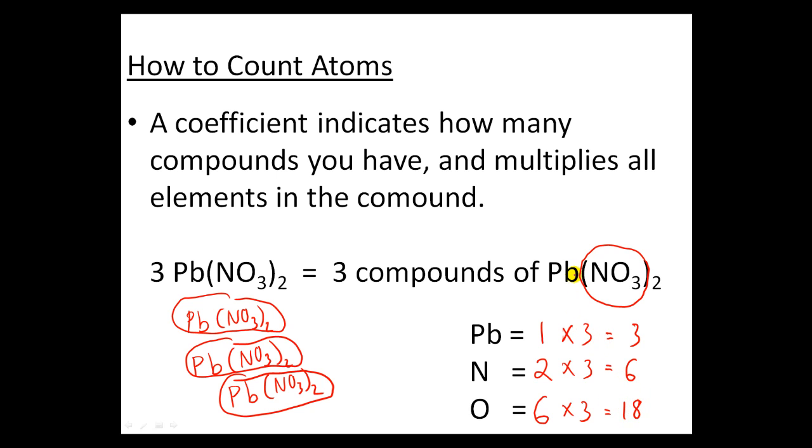Three times one is three, three times two is six, three times six is 18. And there we have it. If I had three of these lead nitrates, let's double check. Do I have three leads? One, two, three. Yes I do. Do I have six nitrogens? Two times one is two, two times one is two, two times one is two. So it's two, four, six nitrogens. And do I have 18 oxygens? Two times three is six, two times three is six, two times three is six. So six, twelve, eighteen.